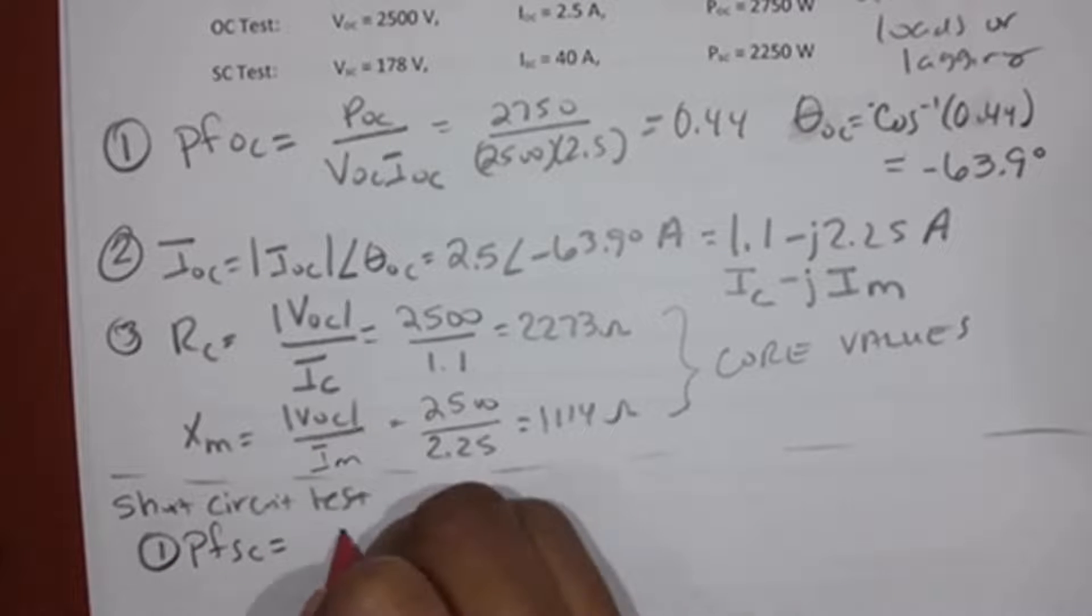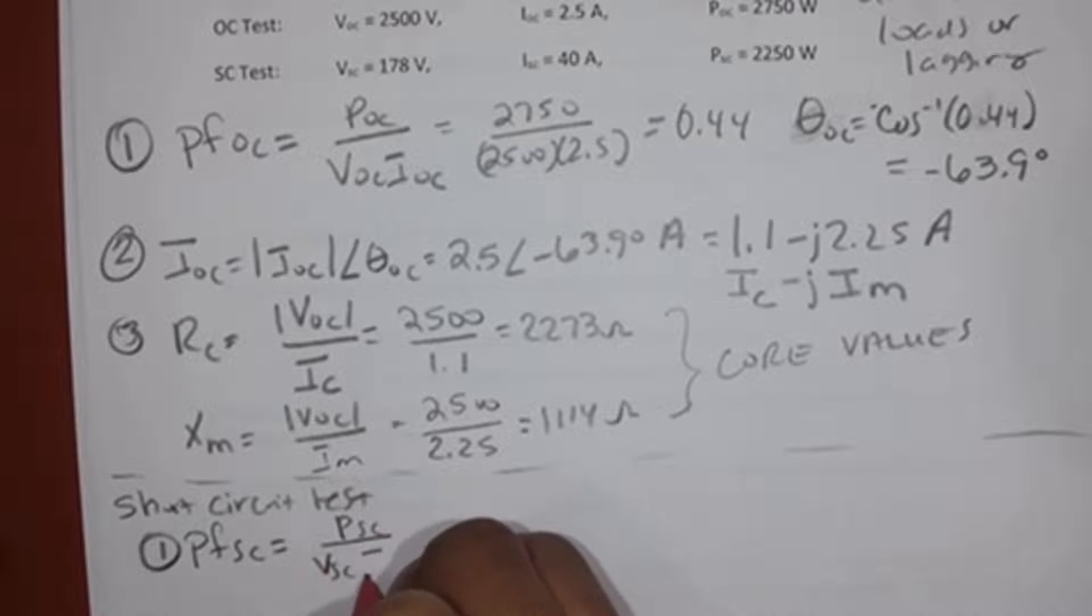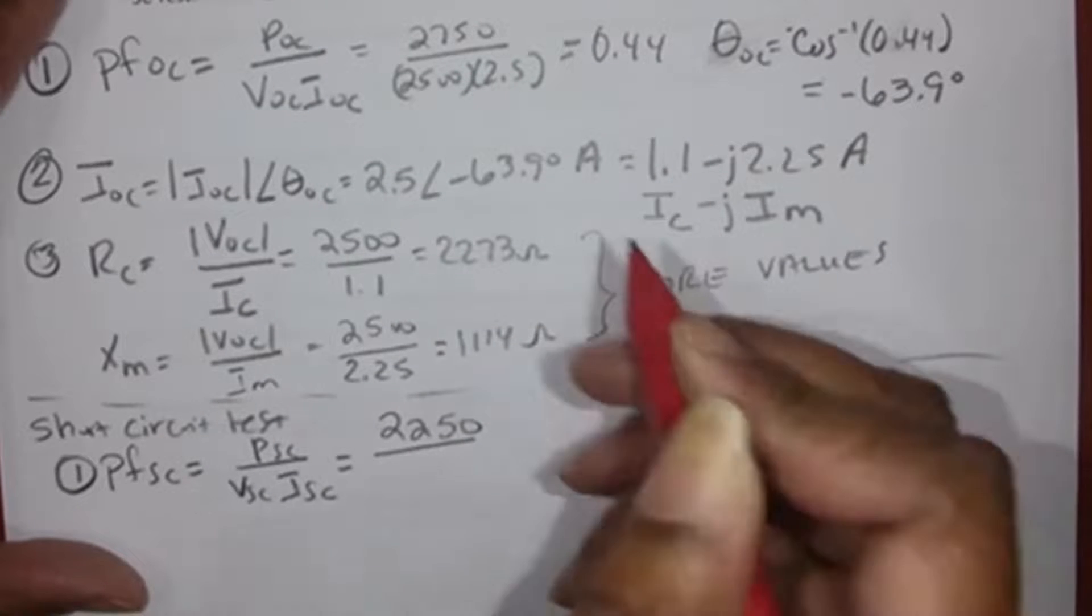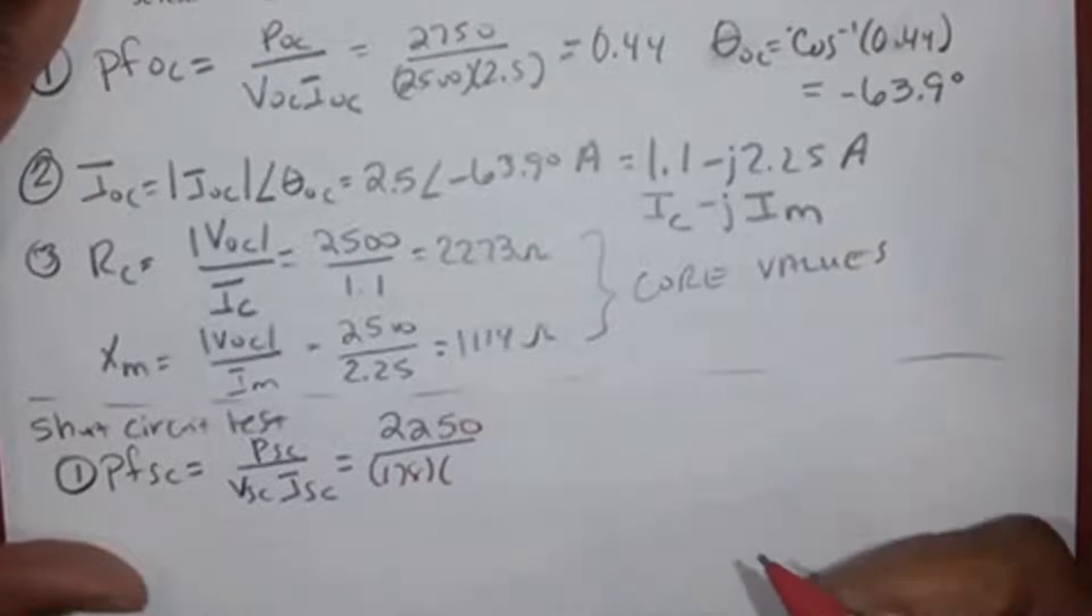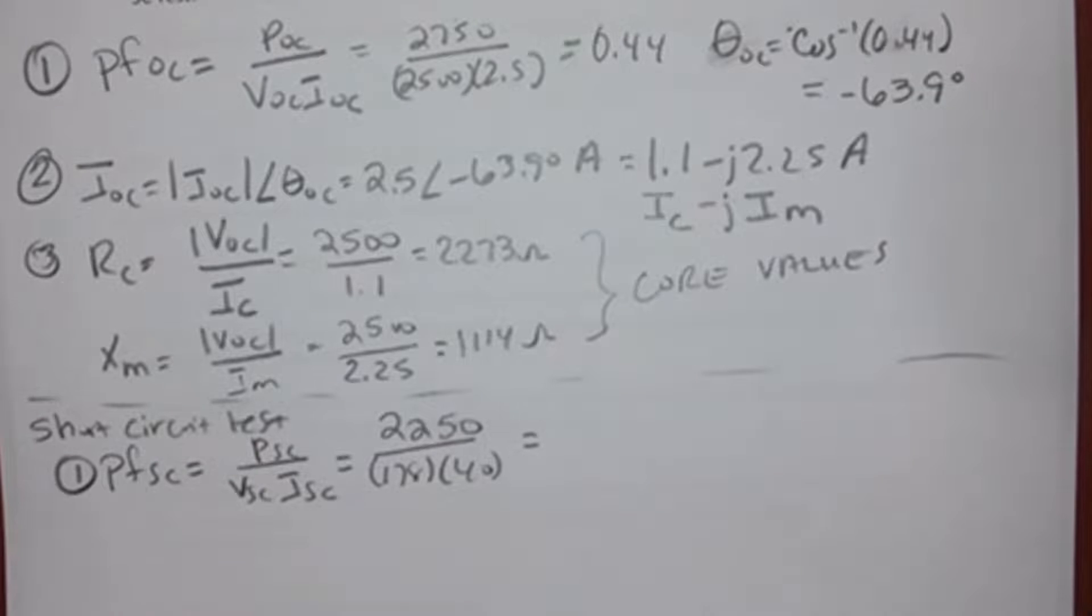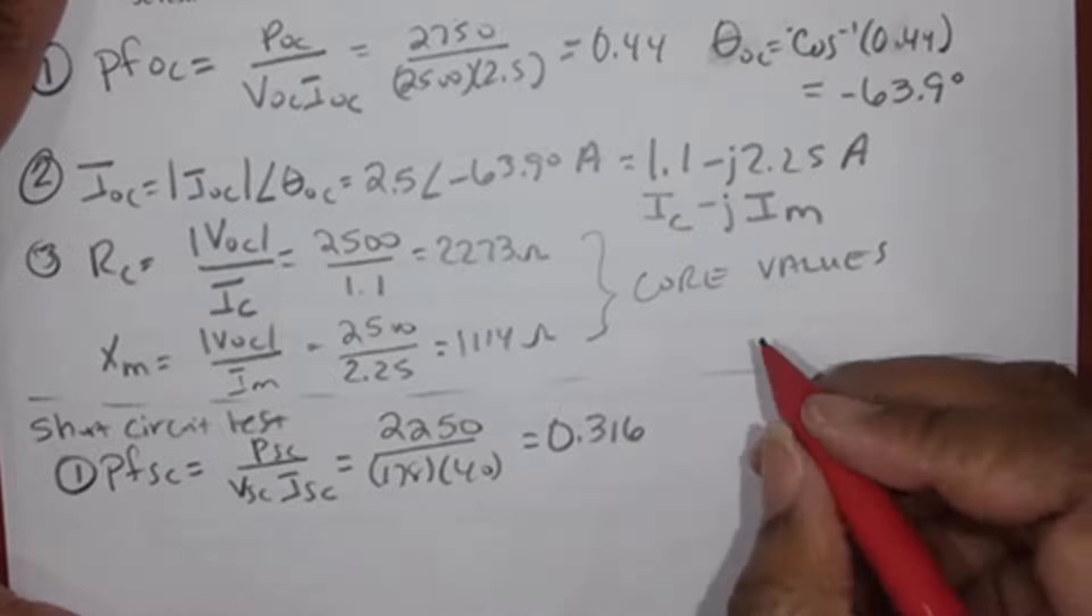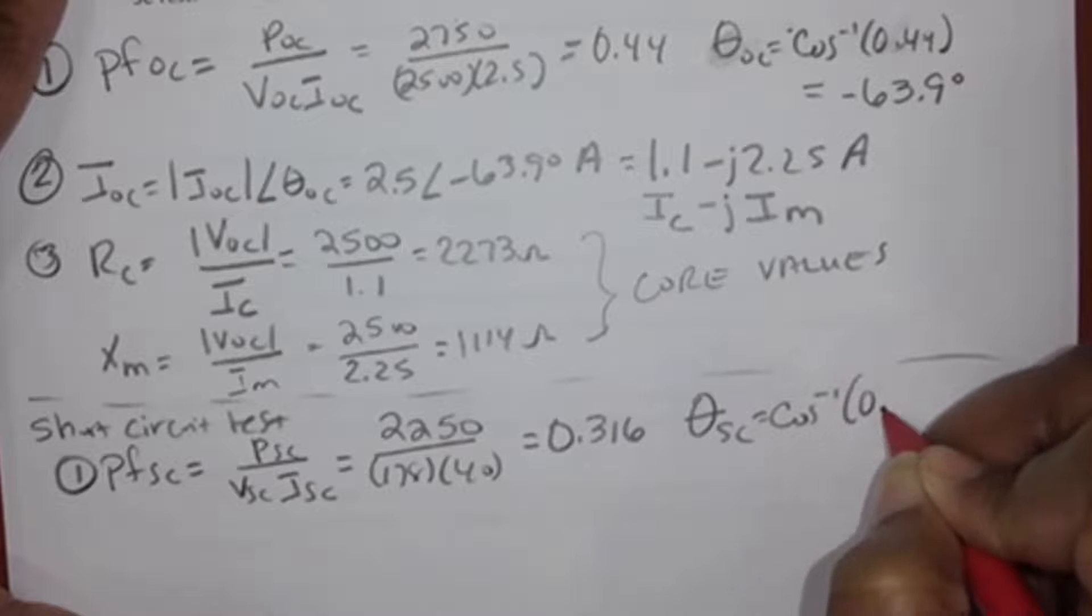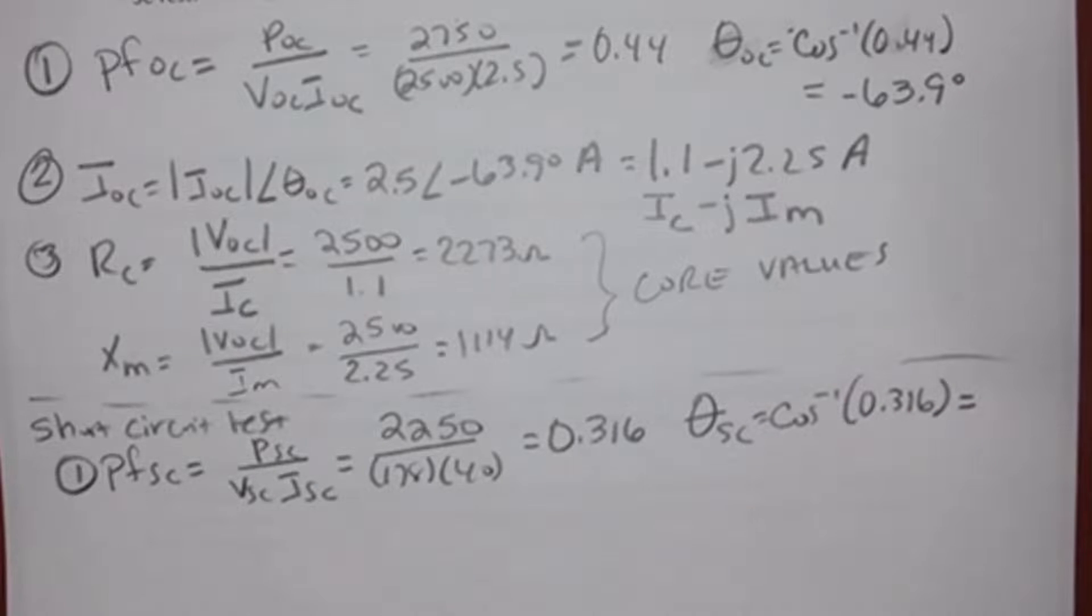So now I walk through those other three steps. Step one is to find PF short circuit. PF short circuit is going to be PSC over VSC times ISC. So that's going to be 2250 over 178 times 40. 0.316. Now find the arc cosine of that power factor. The arc cosine of 0.316 is 71.58 degrees.